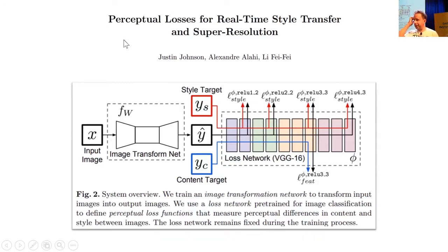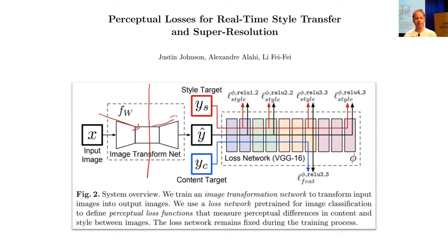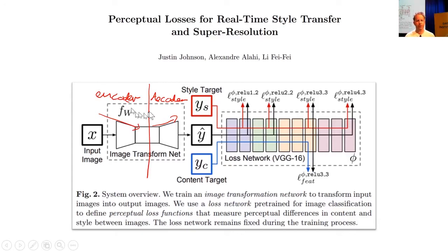Johnson et al. created what they call perceptual losses — it's a nice paper but I hate the term because there's nothing particularly perceptual about them. In the fast.ai library they're referred to as feature losses. They use a generator — called the image transform net — with a UNet-shaped architecture. At the time, nobody in ML much knew about UNets; nowadays we use them. In these architectures the downsampling path is called the encoder and the upsampling path is called the decoder, which is terminology used broadly in generative models and neural translation as well.